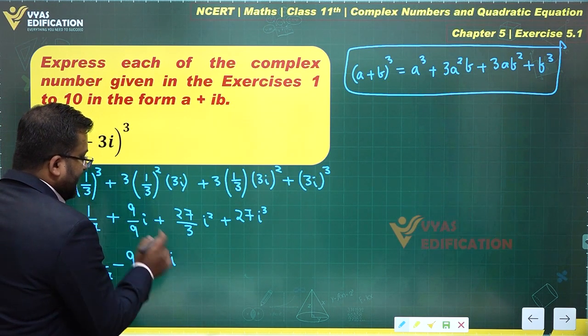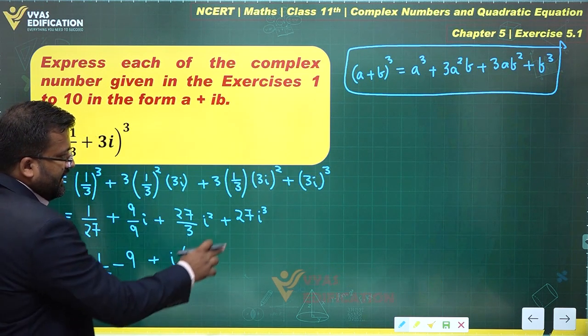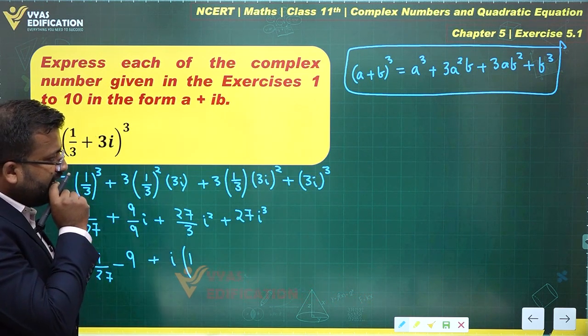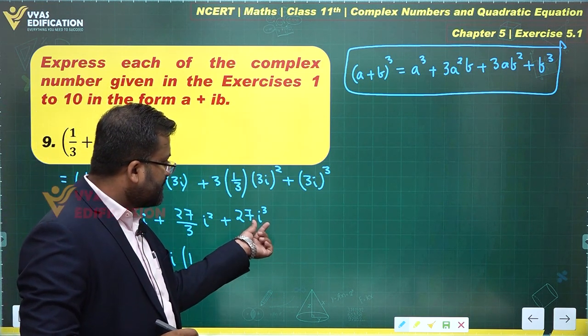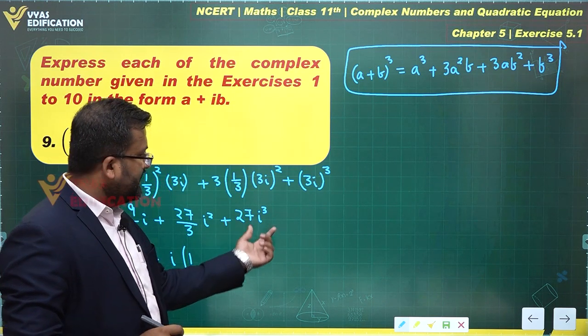Plus i times 9/9 is 1. And what is this equal to? i³—there's an i² hidden, this is i² times i. i² becomes minus, so this is -27i. This is 1 - 27i.